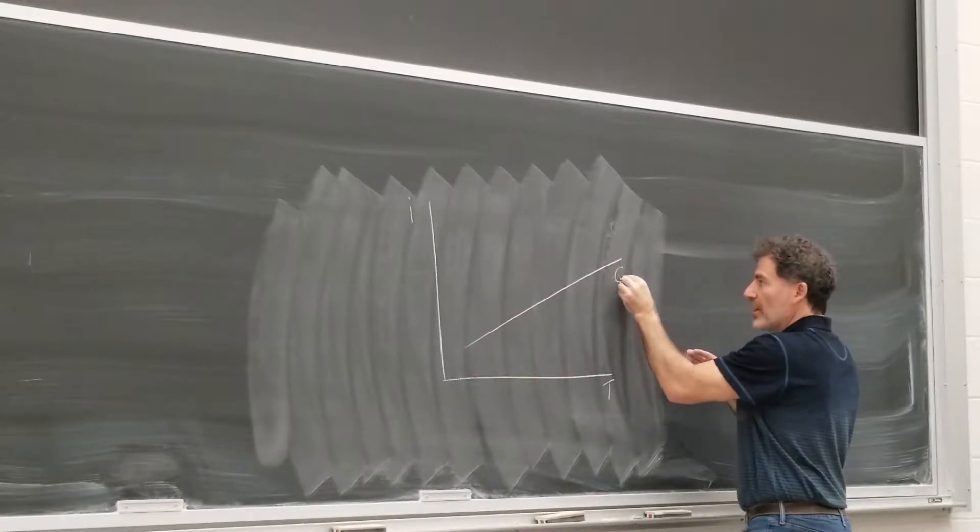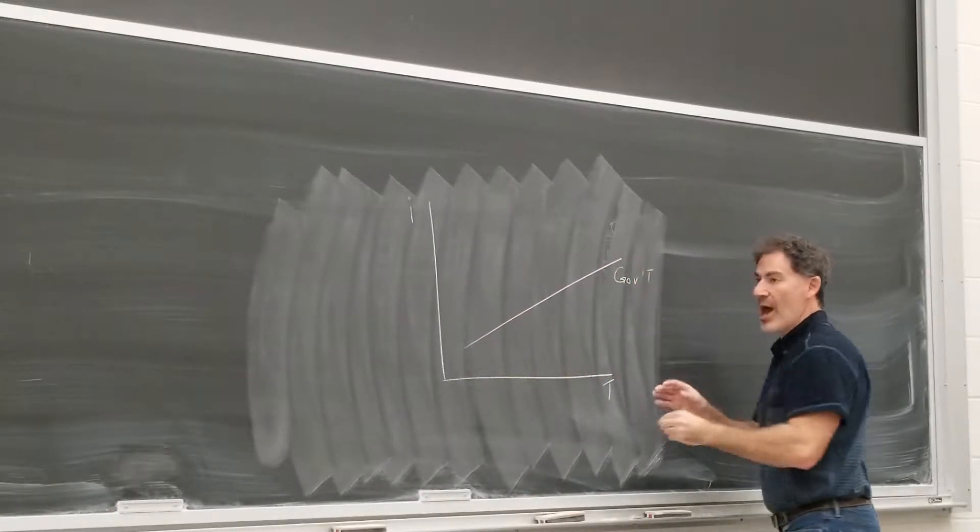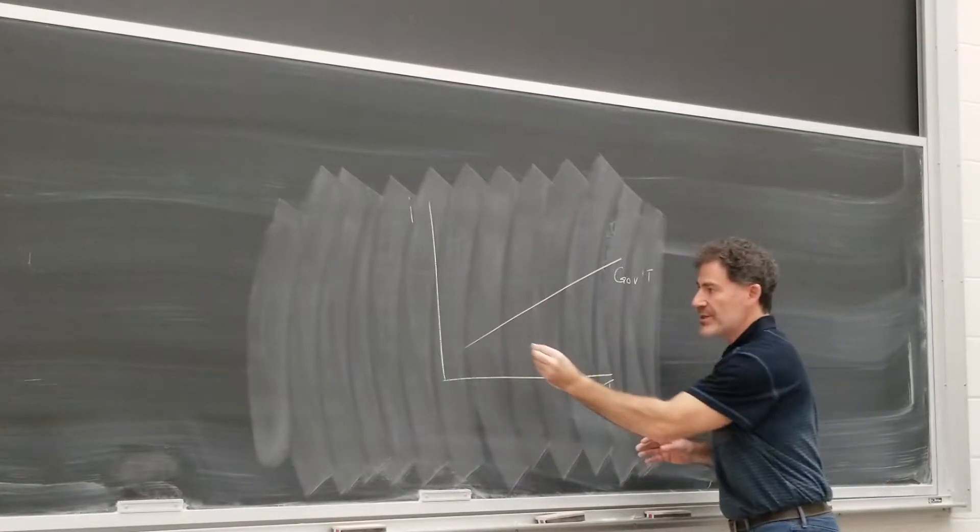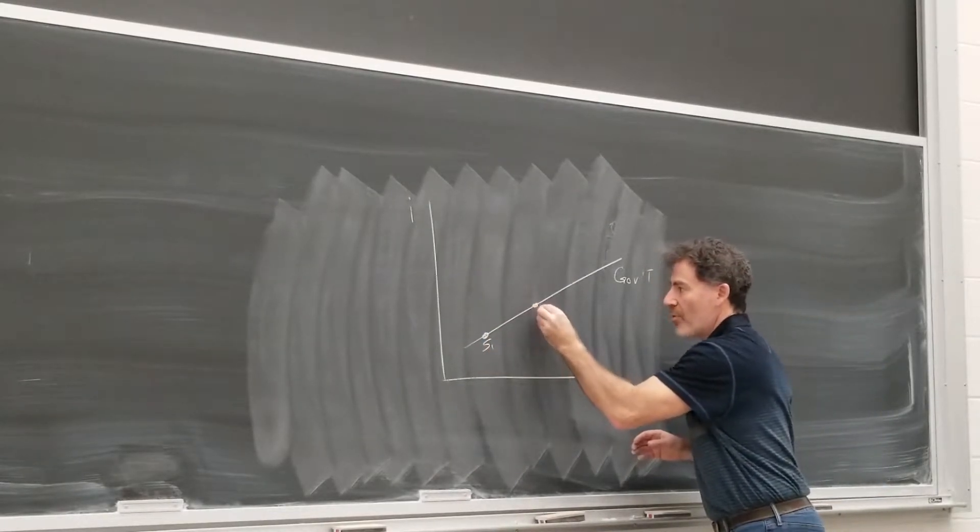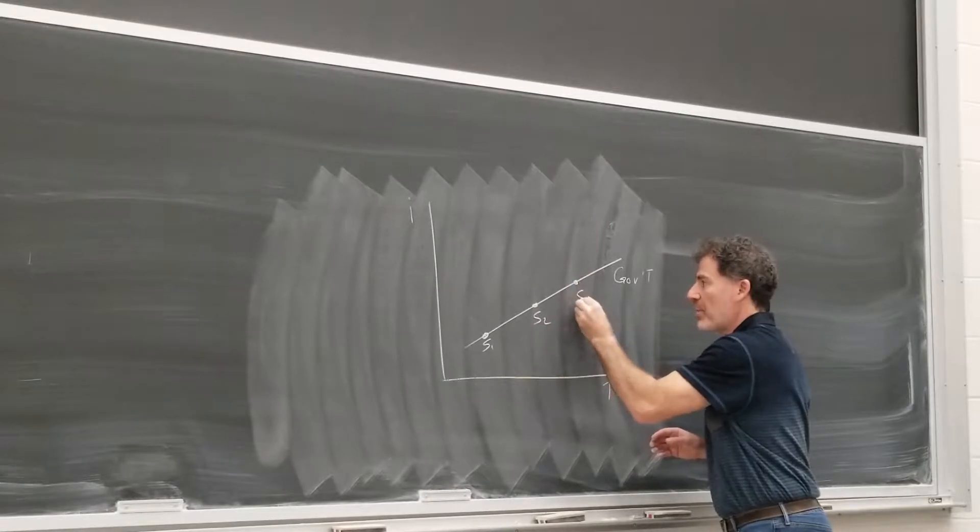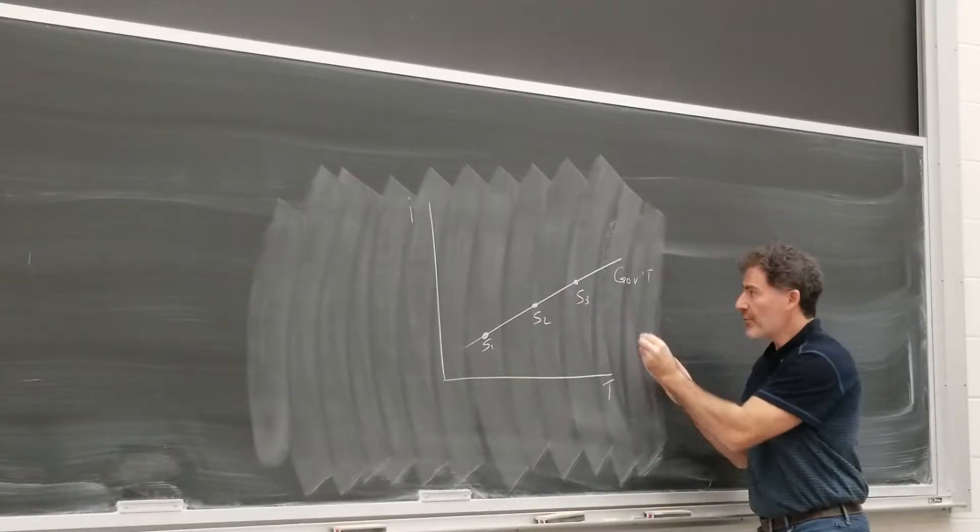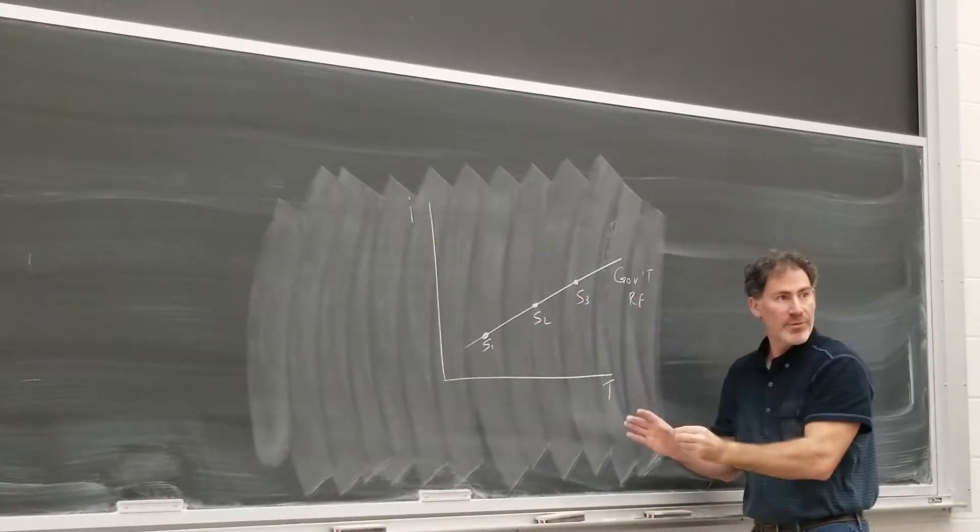So let me draw it upward slowly. This is the government treasuries. These are the risk frees. These are, let's say, the spot rates. Spot rate one, spot rate two, spot rate three. So these are the risk free treasury rates.